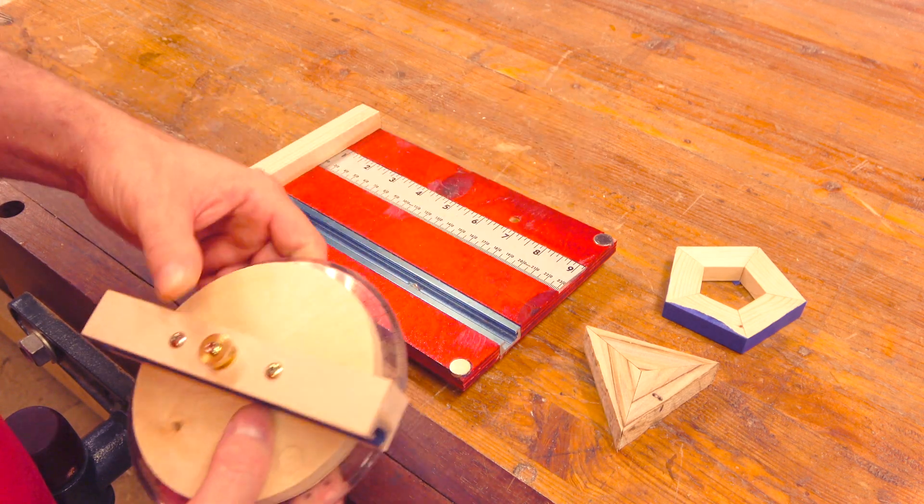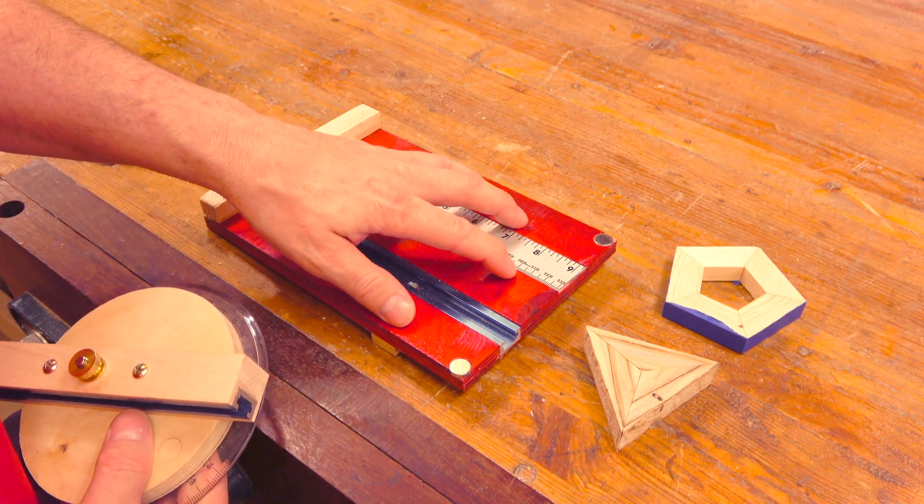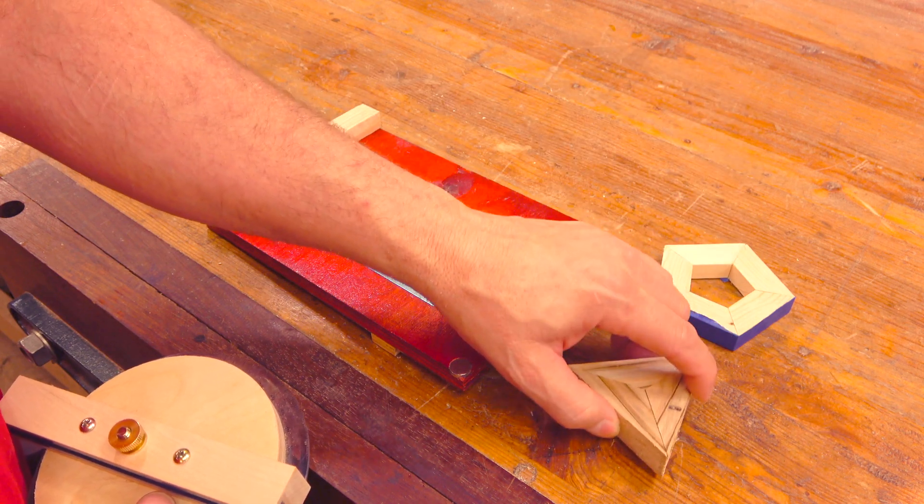In this video, we're going to make a protractor arm that fits with the original bandsaw jig. It will allow you to make complex shapes with your bandsaw.